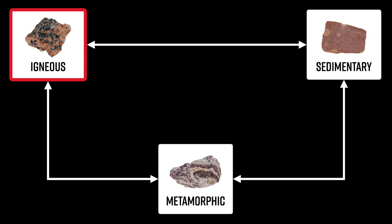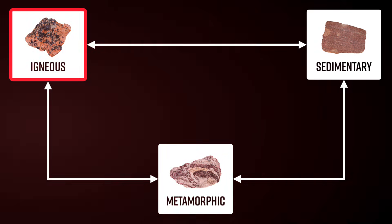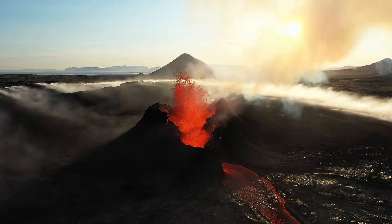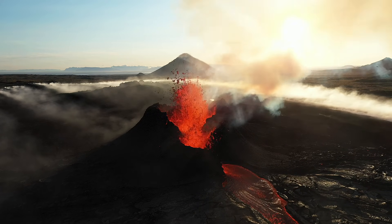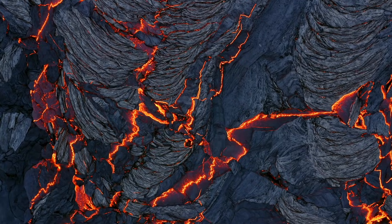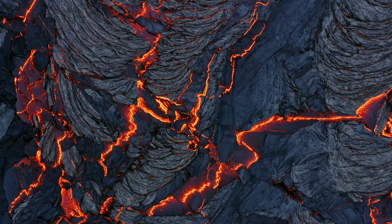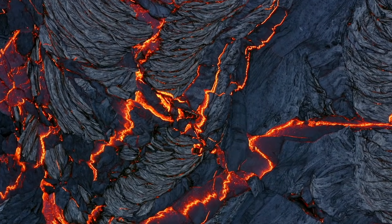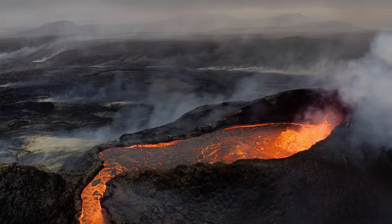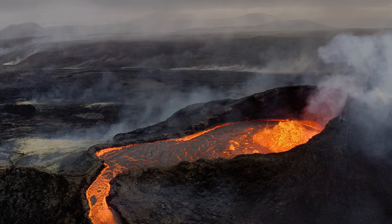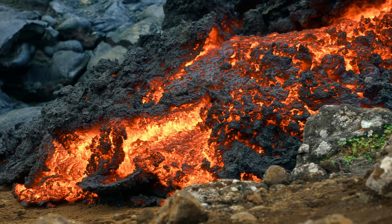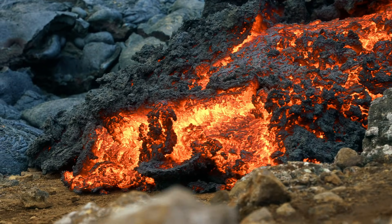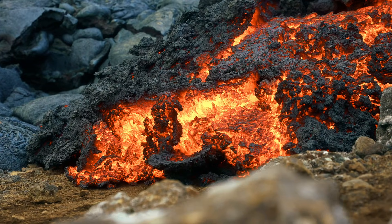Let's begin with igneous rocks. As we mentioned, igneous rocks form as the result of lava or melted rock erupting on the surface of the Earth and then cooling and solidifying. Keep in mind that this can happen deep underground as well with magma, which is simply melted rock beneath the surface. That too can cool and solidify, though it takes a lot longer, and that's what gives us the different characteristics of different types of igneous rocks.